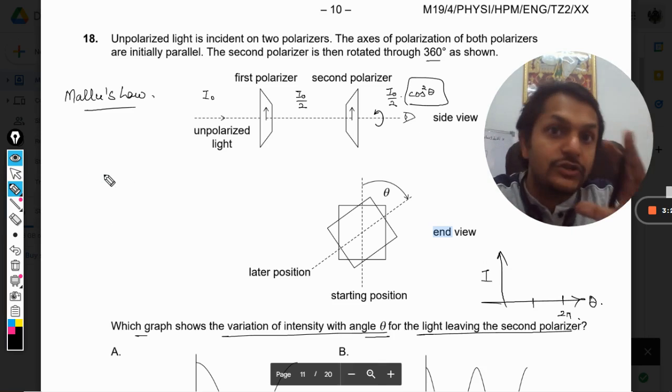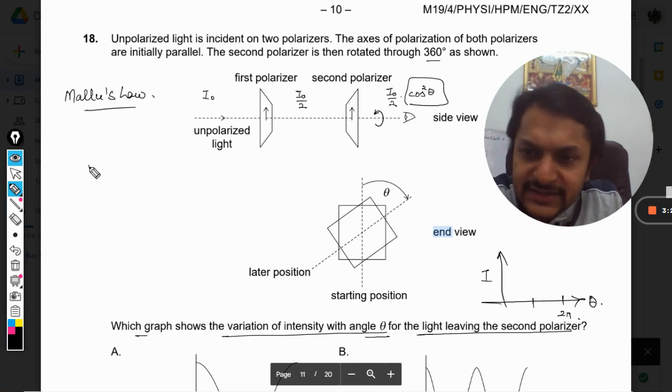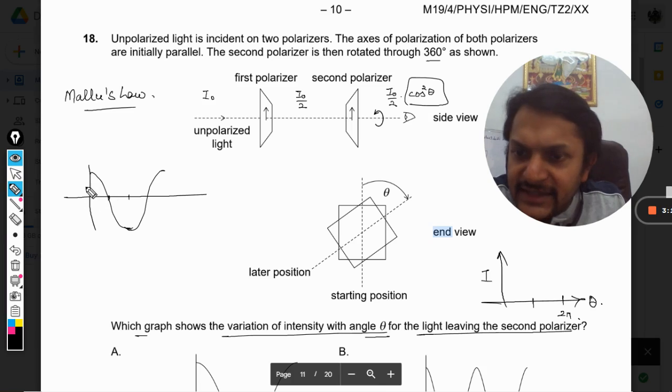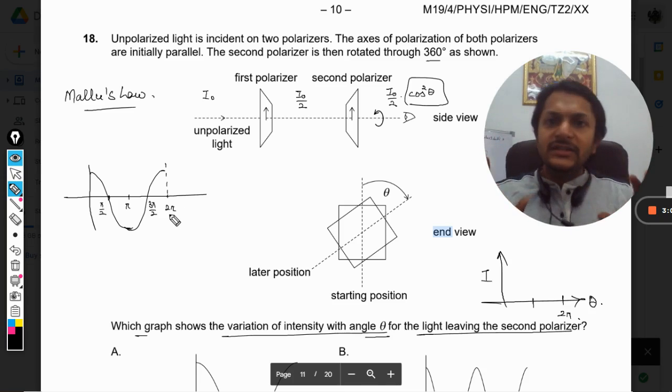How to draw cos square? First of all, this is cos and the graph will be somewhat like this. You can say that this is 0, this is pi by 2, this is pi, 3 pi by 2, and this is 2 pi. This is simple y equals cos theta.